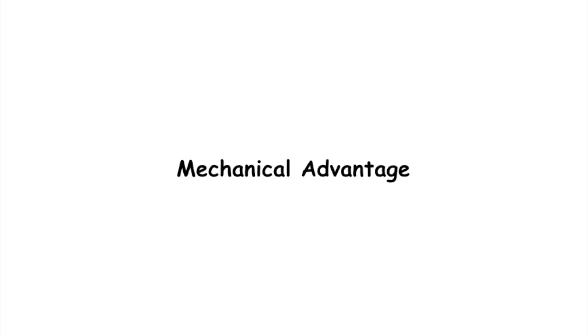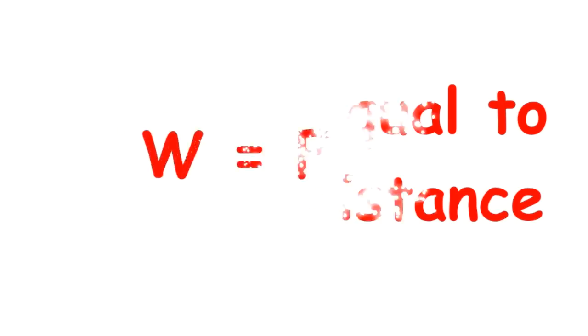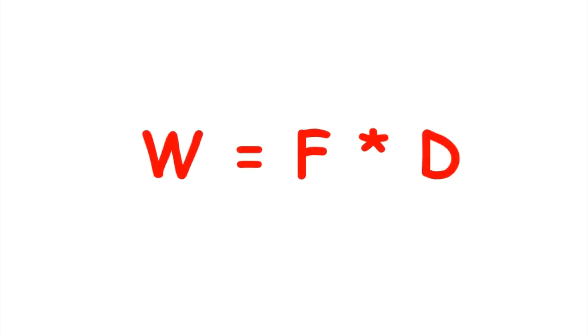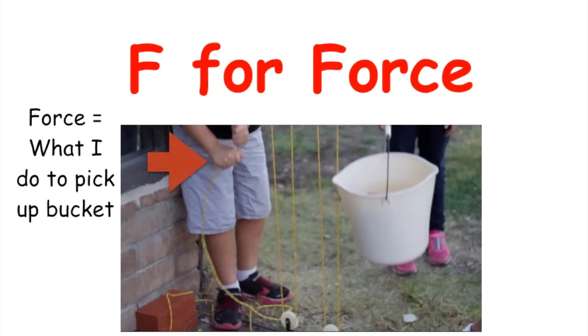Before we talk about how the pulley works, we need to talk about a very important formula. The formula is: work is equal to force times distance, or W = F × D for short. The first part of the formula, F, stands for force — the force is what I do to pick up the bucket.